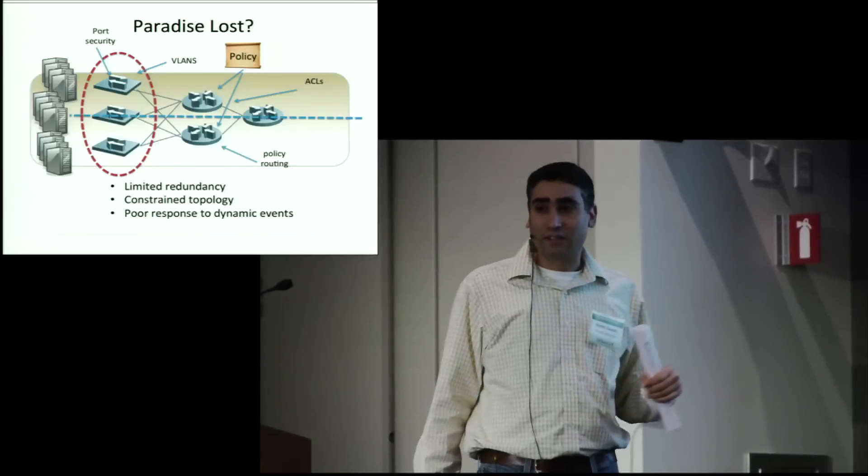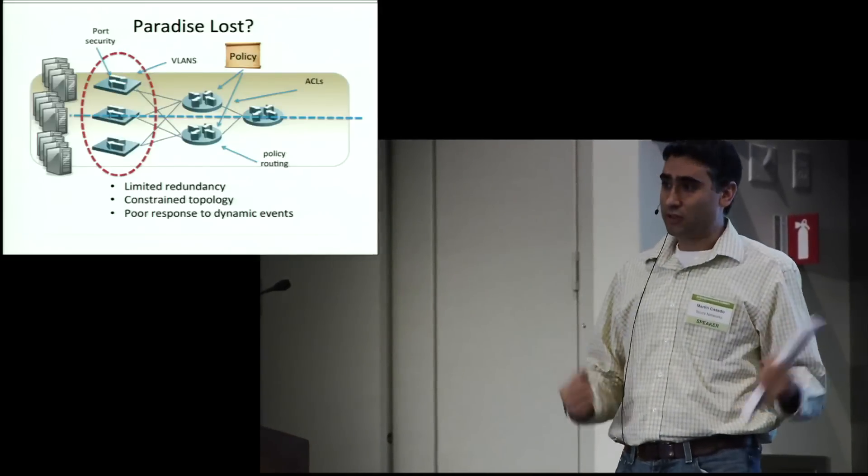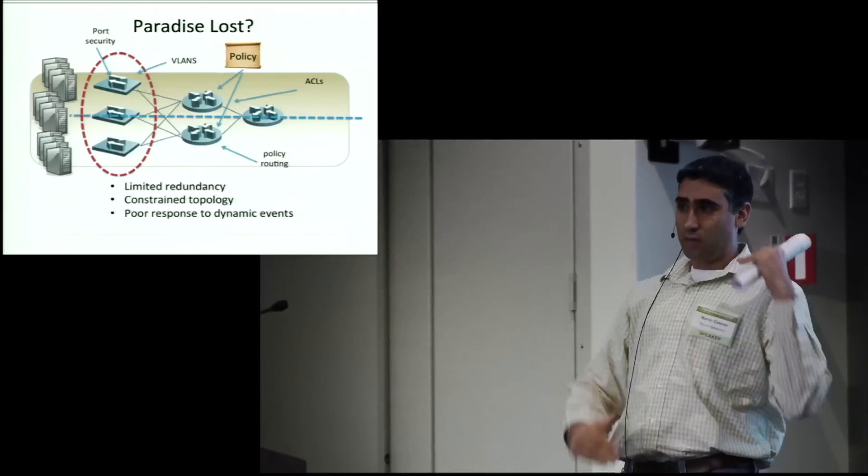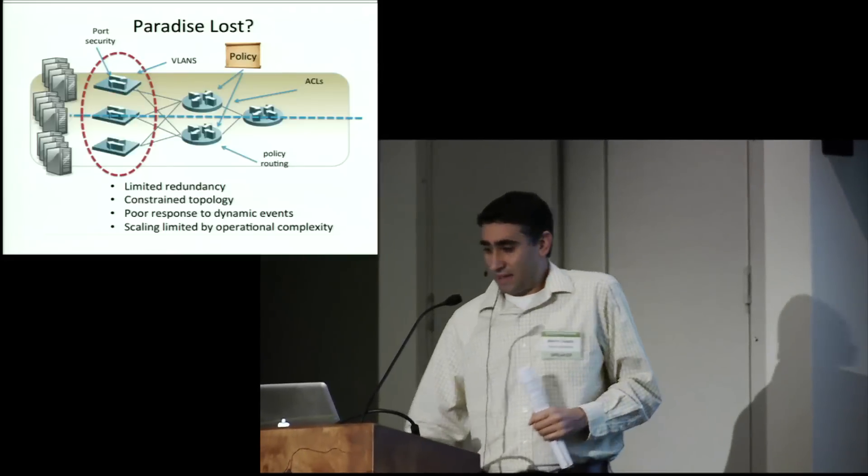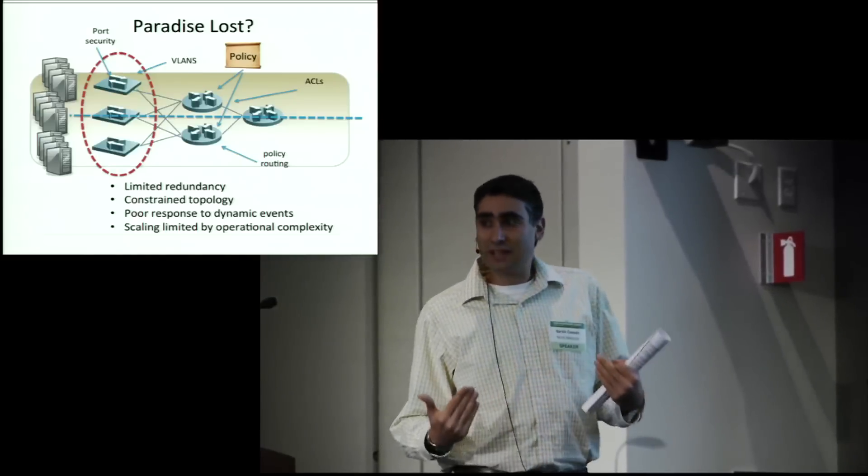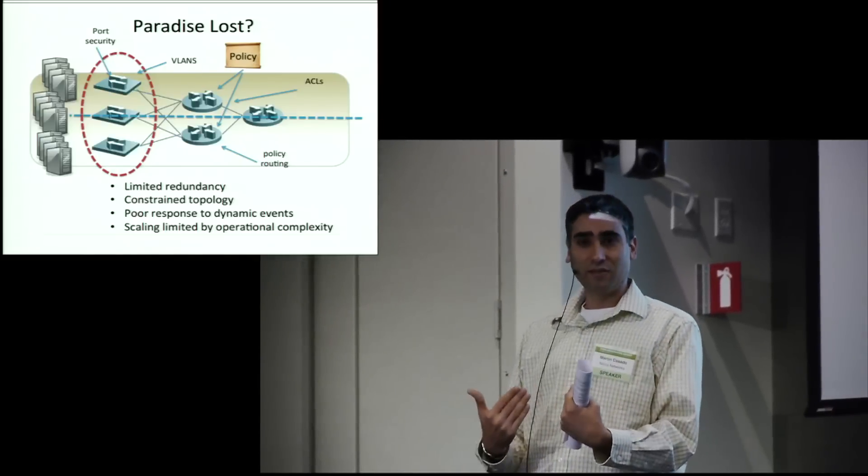We'd constrain the topology because that was the only way we could actually automate the placement of these things. We had very poor response to dynamic events. Literally, moving a machine would take hours. Now, routing protocols, very quick. Human beings, not so much. And finally, the scale of the systems that we were creating were totally limited by our ability to manage the state within them.